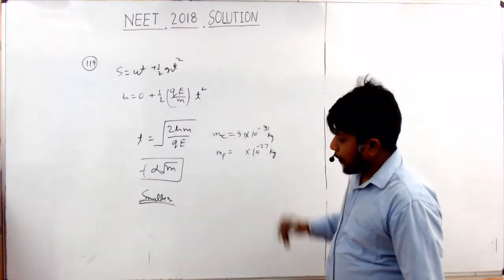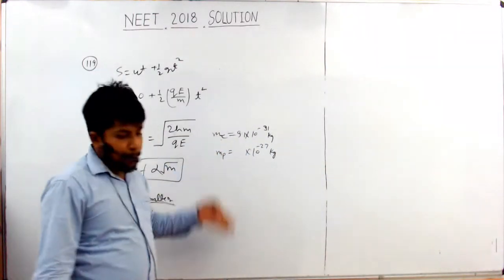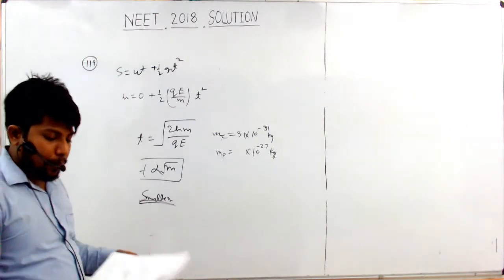The power is negative so the value is smaller. The mass of the proton is very high compared to the electron, so the time is smaller for the electron.